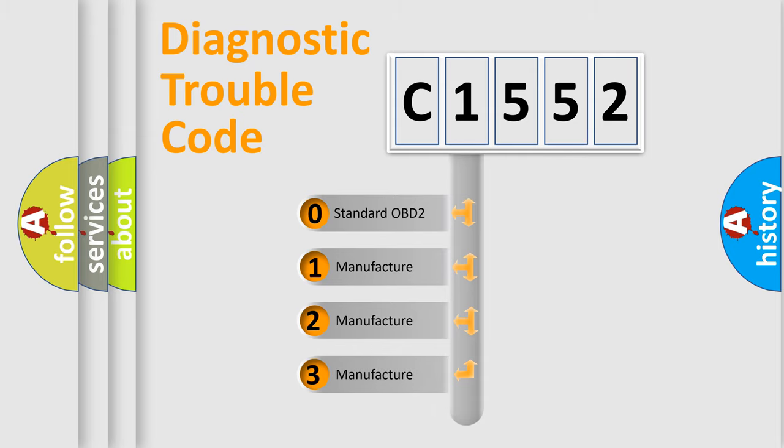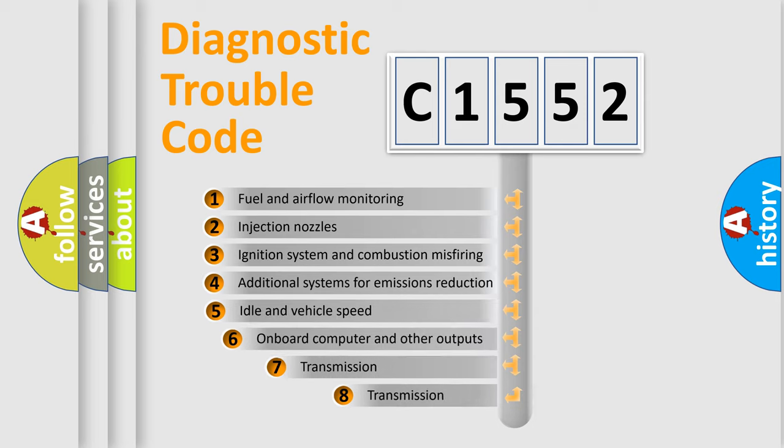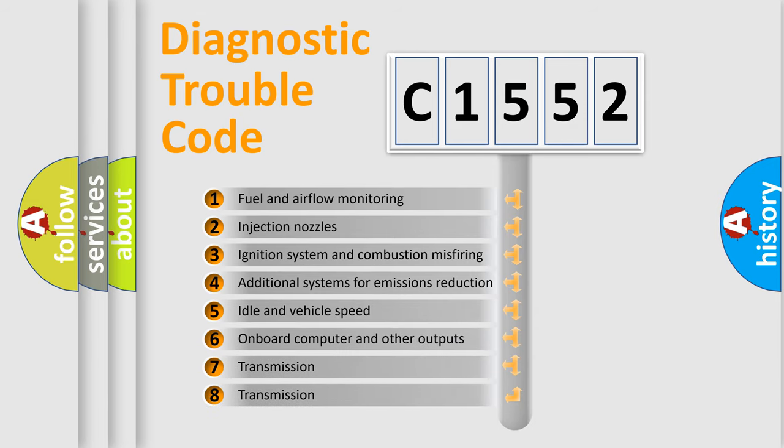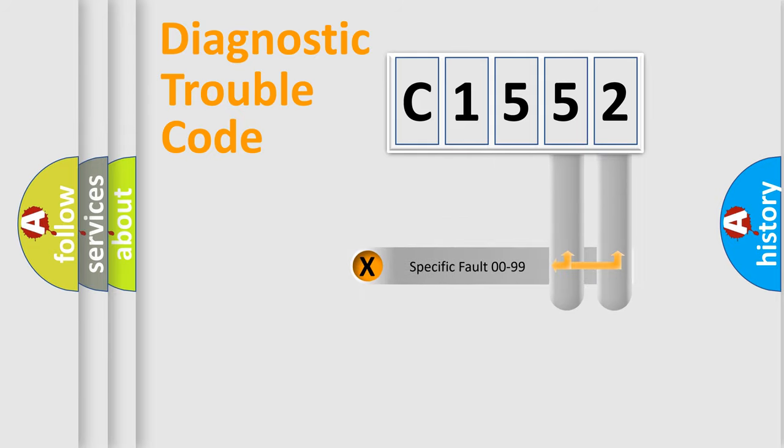If the second character is expressed as zero, it is a standardized error. In the case of numbers 1, 2, or 3, it is a more precise expression of the car-specific error. The third character specifies a subset of errors. The distribution shown is valid only for the standardized DTC code.